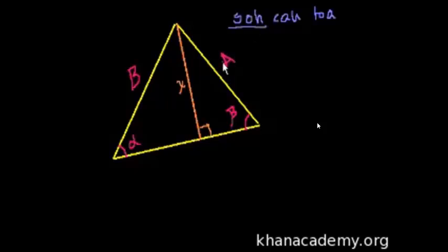Sine, right? And you should probably guess that because I'm proving the law of sines. So the sine of beta is equal to the opposite over the hypotenuse. So it's equal to this opposite, which is X, over the hypotenuse, which is A in this case.